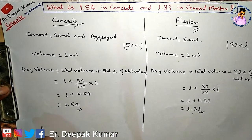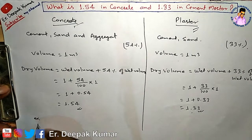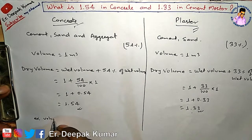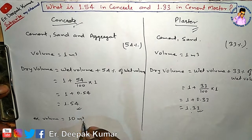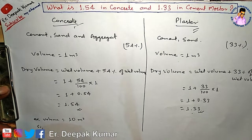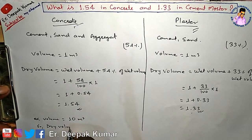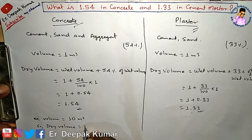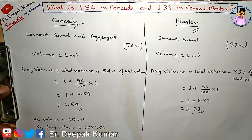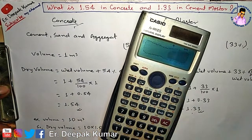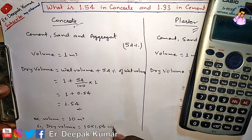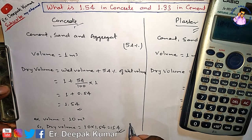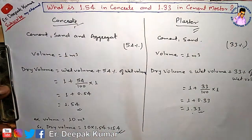For example, if volume equals 10 meter cube for concrete, then dry volume = 10 × 1.54 = 15.4 meter cube. That is the dry volume.